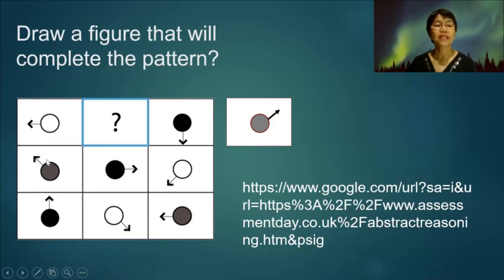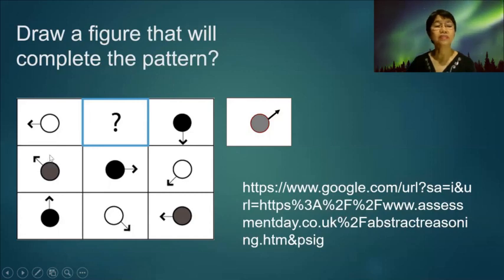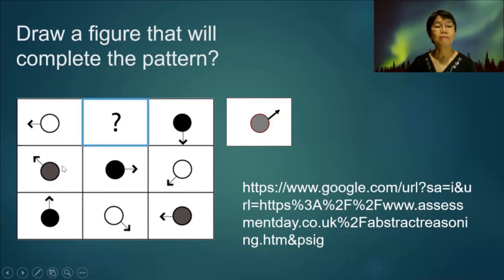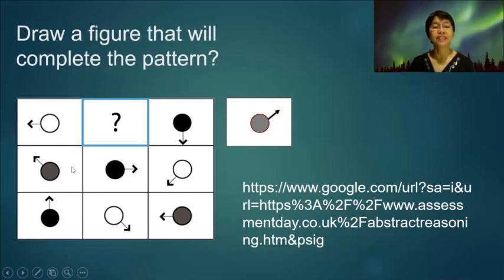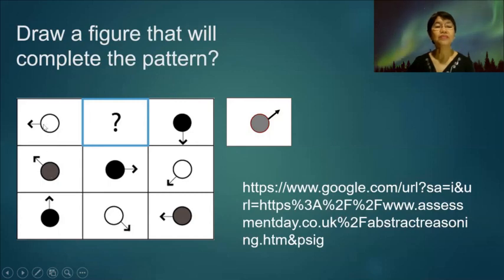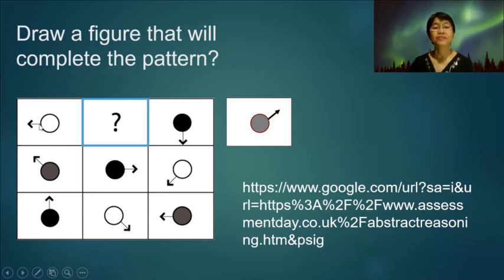Let's also observe the movement of the arrow. The arrow in the second row is moving in a clockwise direction, and the approximate degree of movement is about 135 degrees. So we expect the same movement will happen in the first row. This is the answer.